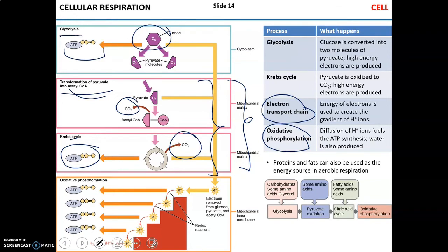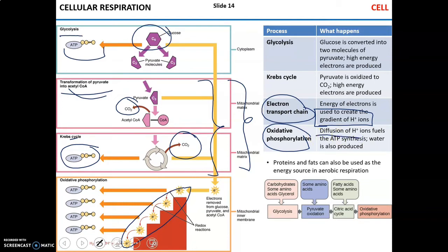In the electron transport chain and oxidative phosphorylation, high-energy electrons are used to create a gradient of hydrogen ions across the inner mitochondrial membrane. That gradient drives diffusion of hydrogen ions across the membrane, providing energy for ATP synthesis. Along with ATP, some water is also produced. Aerobic cellular respiration is the most efficient way to generate ATP.